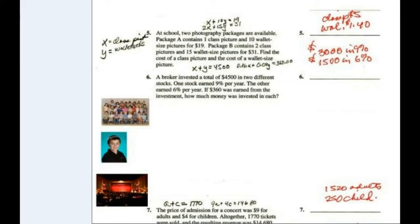All right, now in this next one, we've added a little bit of clip art to it, which is sort of fun. Here, at a school, we have two portrait packages are available. And x would be the class picture, and y would be a wallet sheet. And one class picture and 10 wallets cost $19. And two class pictures and 15 wallets cost $31. So they're asking here, find the cost of the class picture and the cost of the wallet size. So we have it listed here, but how did we get there? Well, we have our two equations, so let's set them up. And this will be x plus 10y equals 19.